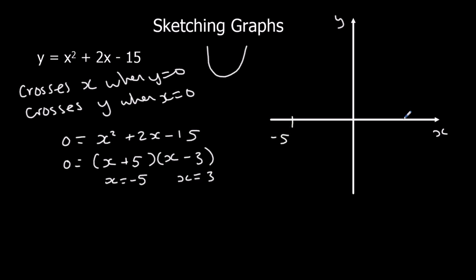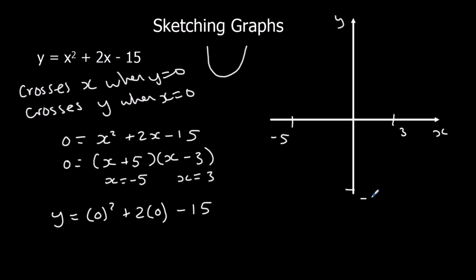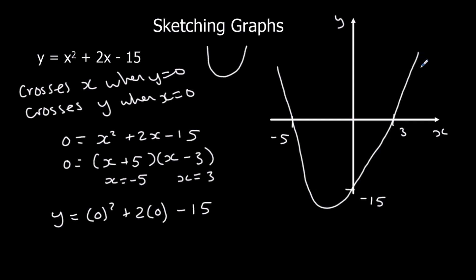So it crosses the x-axis at negative 5 and positive 3. Then it crosses y when x is 0: 0 squared is 0, plus 2 times 0 is still 0, minus 15. So it crosses the y-axis at minus 15. Then we get the shape right — we've got the vague shape right and the two points where it crosses the x-axis and where it crosses the y-axis. That's a perfectly good sketch.